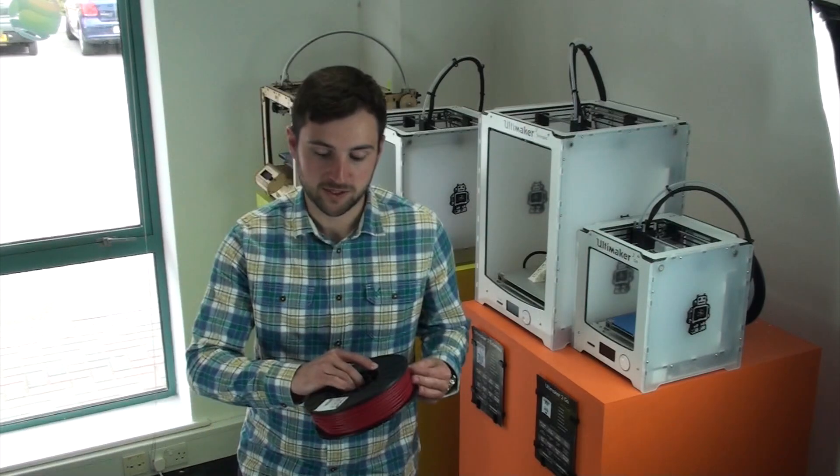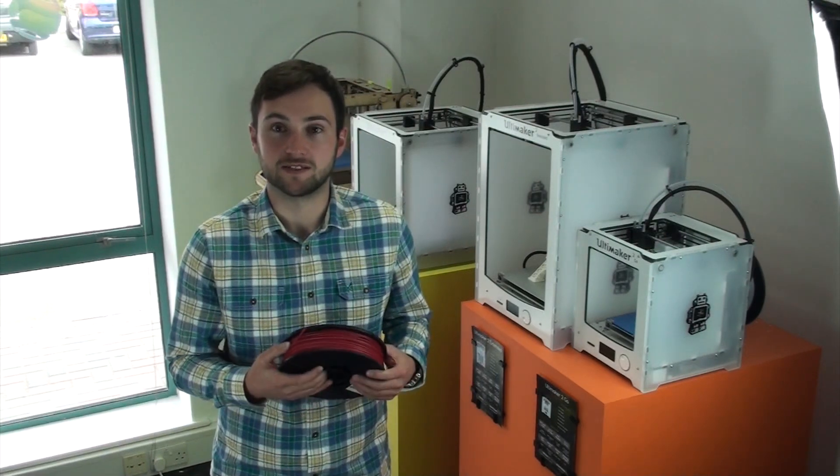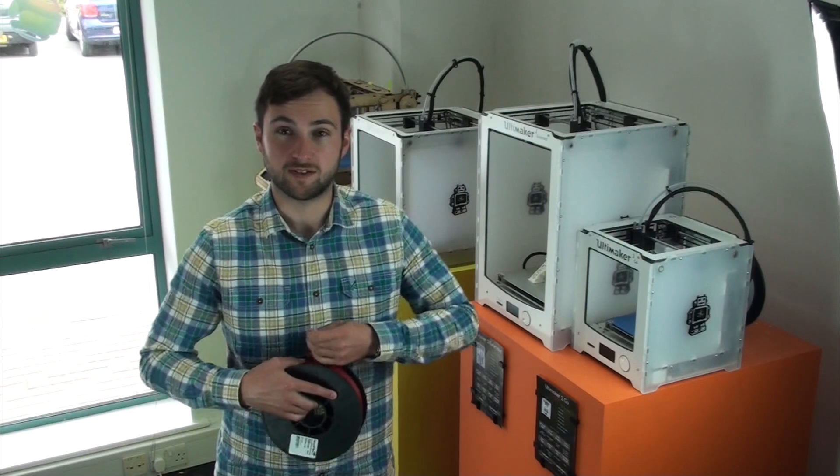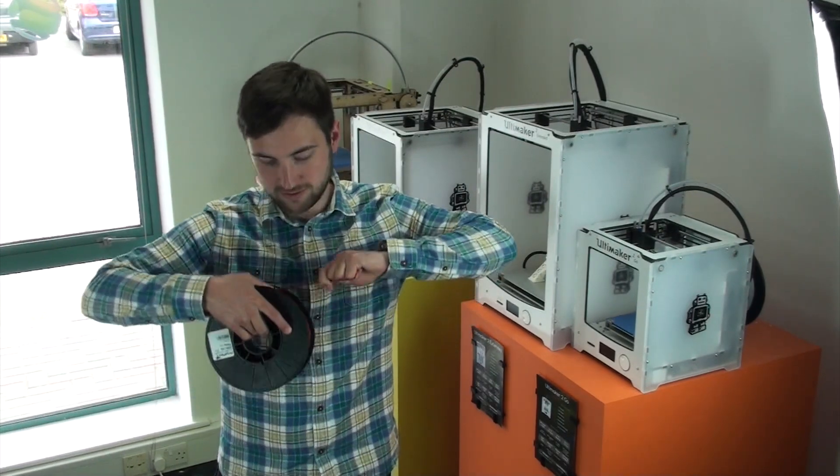In this video I'm going to be talking about printing in Ninjaflex on your Ultimaker 2 3D printer. Ninjaflex is basically a fully flexible 3D printing filament which is really quite strong as you can see.